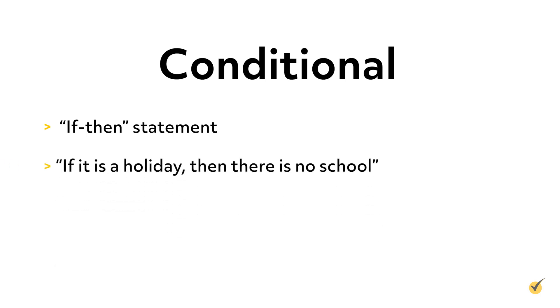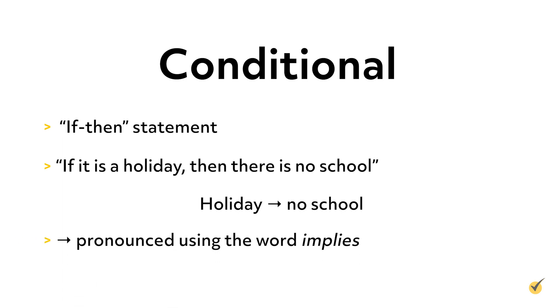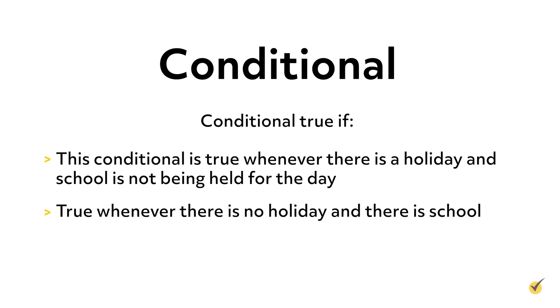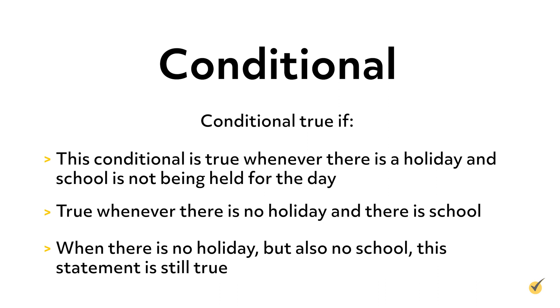The fourth logical operator is the conditional, which we can think of as an IF-THEN statement. For example, 'if it is a holiday, then there is no school' is a conditional, denoted by a left-to-right arrow between the two simple statements. This arrow is usually pronounced using the word 'implies.' Conditionals are only untrue whenever the first statement is true but the second is false. This conditional is true whenever there is a holiday and school is not held, and also true when there is no holiday and there is school, or even when there is no holiday and no school. The conditional only becomes false when there is a holiday and there is school. Conditionals only flow one way — left to right.